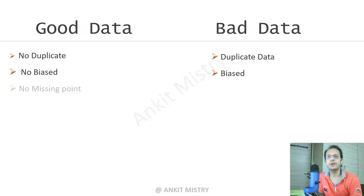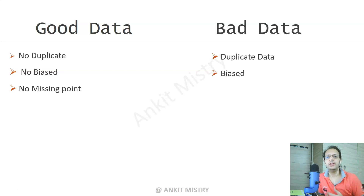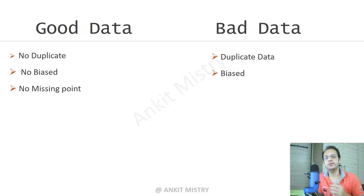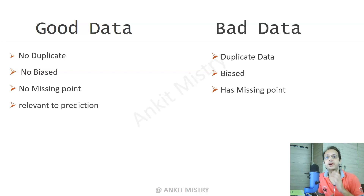The next characteristic is 'no missing data points.' Missing data means you have records available but some characteristics may be missing. Most machine learning algorithms cannot handle missing values, so as a data scientist or data analyst, before applying any algorithm, you have to clean that data — either impute those values or discard them. Good data doesn't contain missing records, whereas bad data may have missing data points.